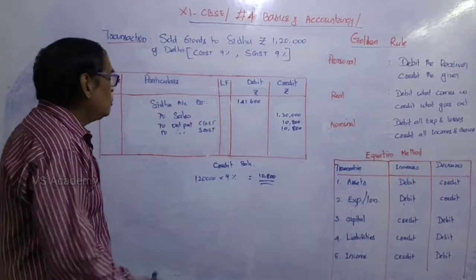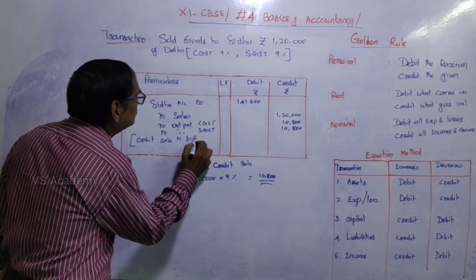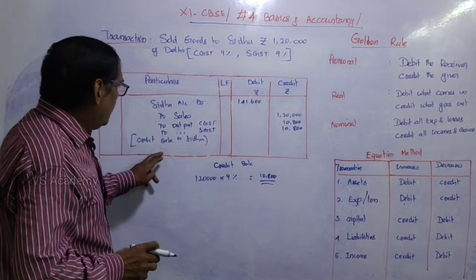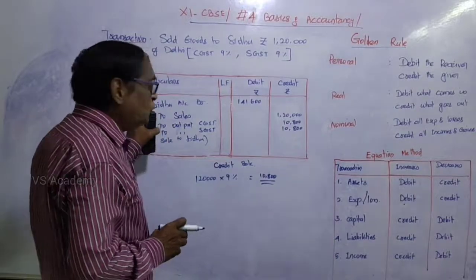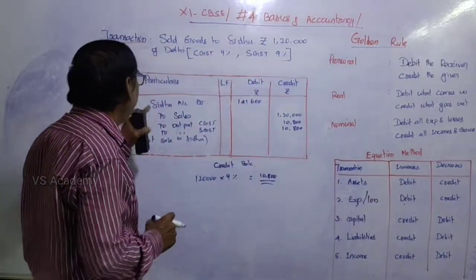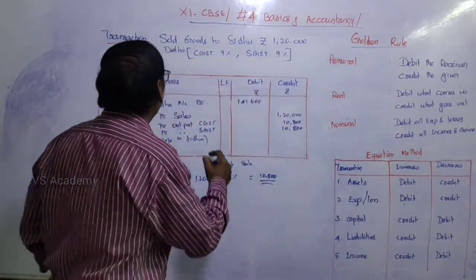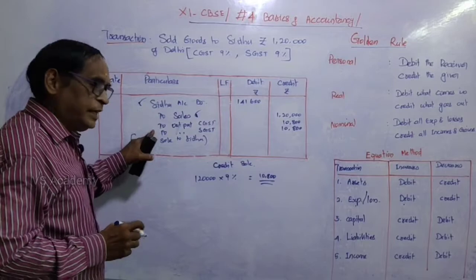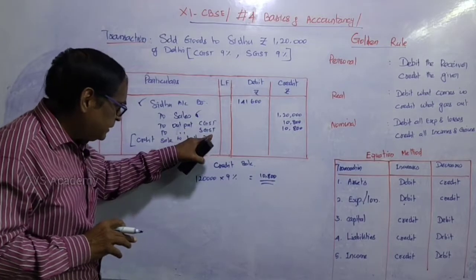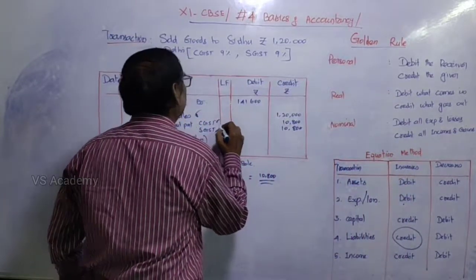Under the equation method for the sale to Siddhu: Siddhu is a debtor — a sundry debtor is an asset — increase in asset is debited, so Siddhu's account is debited. Sales is income — increase in income is credited. Output CGST and output SGST, even though they appear as income, must be repaid to the government, so they are liabilities. Increase in liability is credited, so output CGST and output SGST accounts are both credited.